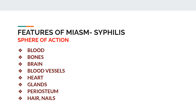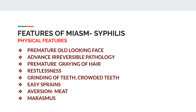Action on blood vessels leads to degeneration of the intimal membrane of the arteries, leading to irreversible hypertension. Action on the heart leads to myocardial infarction. Degenerative changes are seen in the glands, which may also be of a malignant variety. Action on the periosteum again shows destruction and degeneration. Action on hair and nails — nails are deformed and brittle.